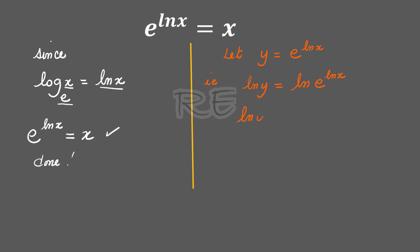Therefore ln y, if we use the product rule, is equal to ln x times ln e, and log base e of e is 1. So ln y is equal to ln x times 1.